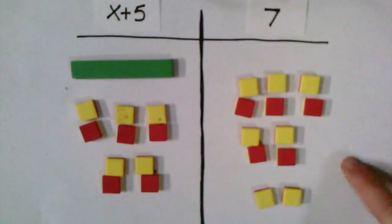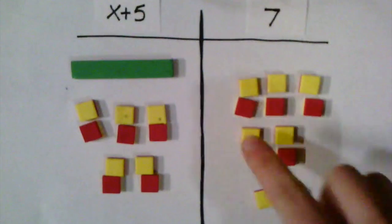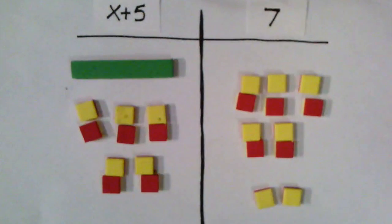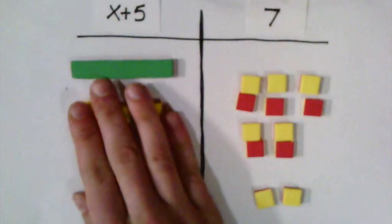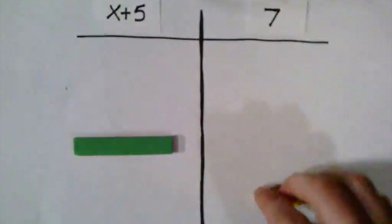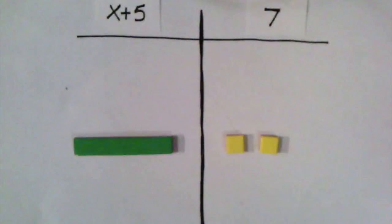Now that I've added 5 red tiles to the right side of my equation, I can see that all these ones have created zero pairs and are going to cancel each other out. But these two are left by themselves. This means if I clear out all the zero pairs from the left side and the right side of my equation, I can easily see that x is equal to a positive 2.